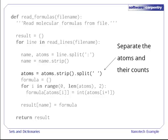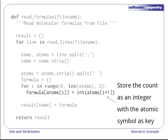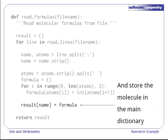We then split the formulas into a list of strings, which alternate between atomic symbols and counts, and loop over those values, moving forward two elements at a time, storing the atomic symbol and count in a dictionary. Once we're done, we store that dictionary as the value for the molecule name in the main dictionary.